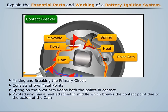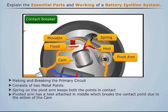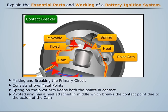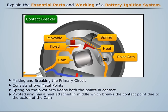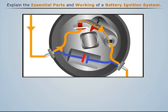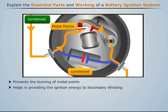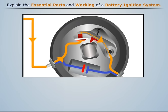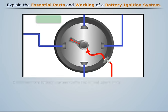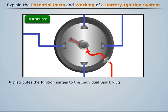As the high point on the cam passes under the heel, the contact breaks and current flow through the contact breaker stops. A condenser is connected in parallel with the contact breaker to prevent the burning of the metal points and also helps in providing the ignition energy to the secondary winding.